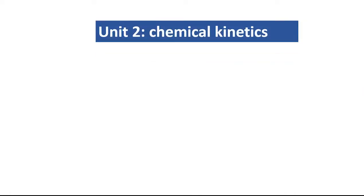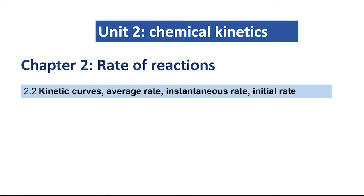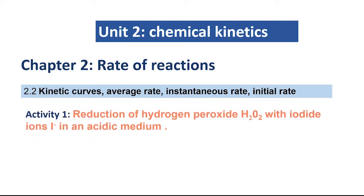Unit 2 Chemical Kinetics Chapter 2 Rate of Reactions. Part 2-2 Kinetic Curves Average Rate, Instantaneous Rate, Initial Rate. Activity 1 Reduction of hydrogen peroxide H2O2 with iodide ions I- in acidic medium. Objective: Plot the curve and use the kinetic graph.